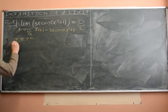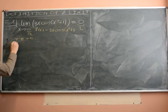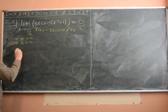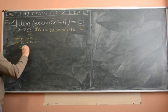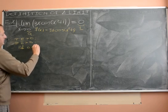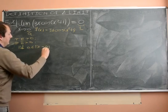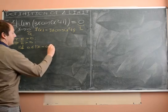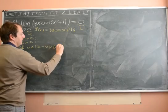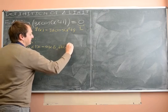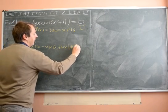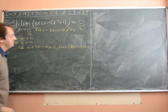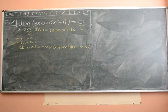For any positive number epsilon, there exists some positive number delta bigger than 0, so that if the distance between x and a — in this case a is 0 — is less than delta, then the distance between f of x and L — in this case L is also 0 — is less than epsilon.